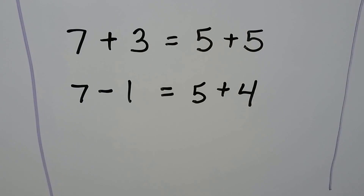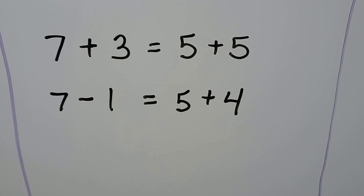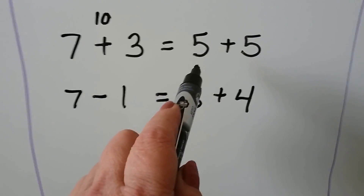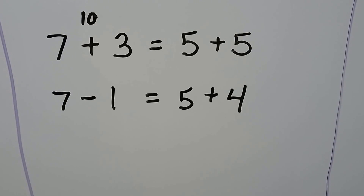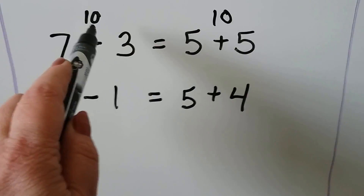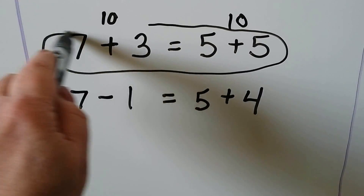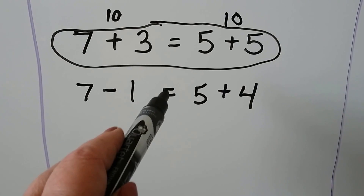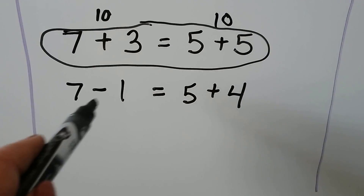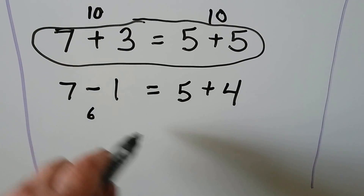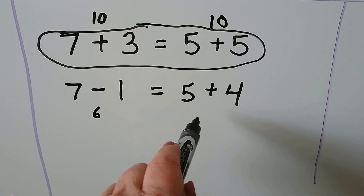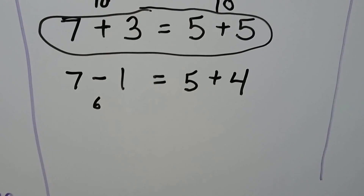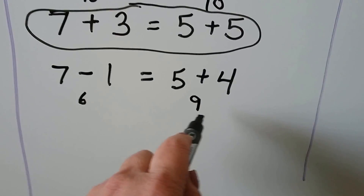7 plus 3 is equal to 5 plus 5. Is that true? 7, 8, 9, 10 — this one is a 10. And 5 plus 5, that's doubles. If you said 10, you're right, so this one's true — 10 is equal to 10. 7 minus 1 is equal to 5 plus 4. 7 minus 1 is 1 less than 7, that would be a 6. Is 5 plus 4 equal to 6? If we start at the 5 and count on: 5, 6, 7, 8, 9. 5 plus 4 is equal to 9. 6 is not equal to 9, so this one's false.